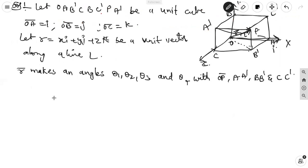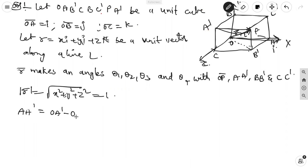Here, modulus of R vector equals under root of x² + y² + z². It is the unit vector, so we take it as 1. Now, we can find out the diagonals. AA dash = OA dash minus OA. A dash means it is in the y-z plane, that is j + k. B dash is in the x-z plane, so it is i + k. C dash is in the x-y plane, that is i + j. OA is along x-axis means i, OB is along y-axis means j, OC is along z-axis means k — these are the unit vectors.